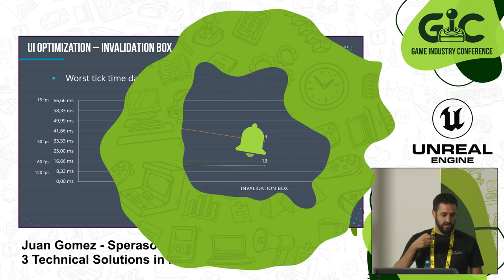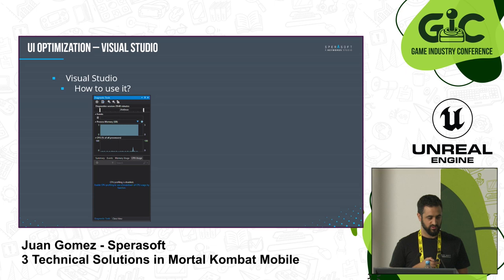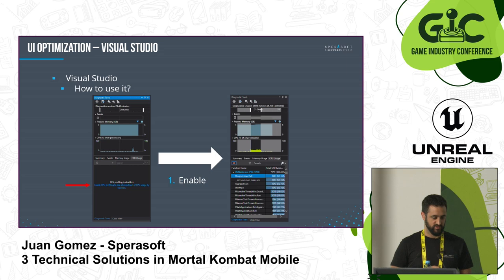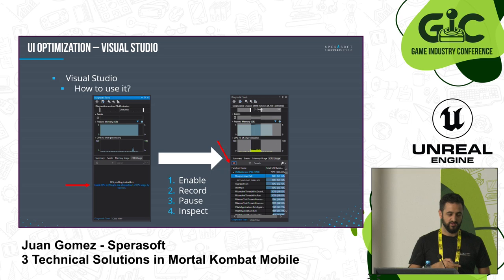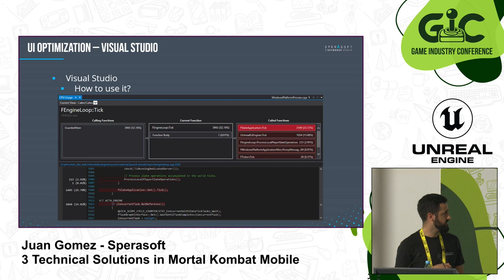I'm talking here about Visual Studio profiling. It's quite simple to use: when you are debugging, enable it by pressing the button, then start recording. Once you pause the profiling, you can inspect the results. You have on top a call stack with timing for each function, and you can navigate to the code. It's very helpful and convenient. Unreal has good tools like Unreal Insights, but Visual Studio is in some cases more convenient for a programmer — and you can also take this experience to other game engines.